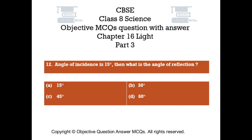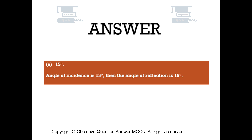Question number 12: Angle of incidence is 15 degrees, then what is the angle of reflection? Option A: 15 degrees, Option B: 30 degrees, Option C: 45 degrees, Option D: 60 degrees. The right answer is Option A: 15 degrees. Angle of incidence is 15 degrees, then the angle of reflection is 15 degrees.